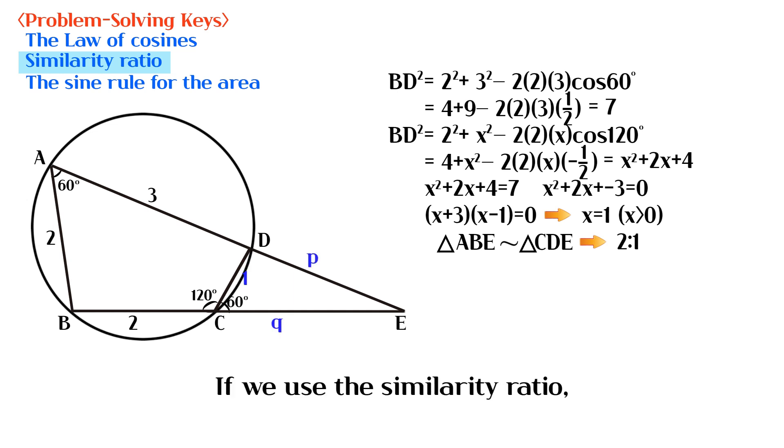If we use the similarity ratio, we can set up the equations for P and Q. 3 plus P to Q is equal to 2 to 1. 2 plus Q to P is equal to 2 to 1.